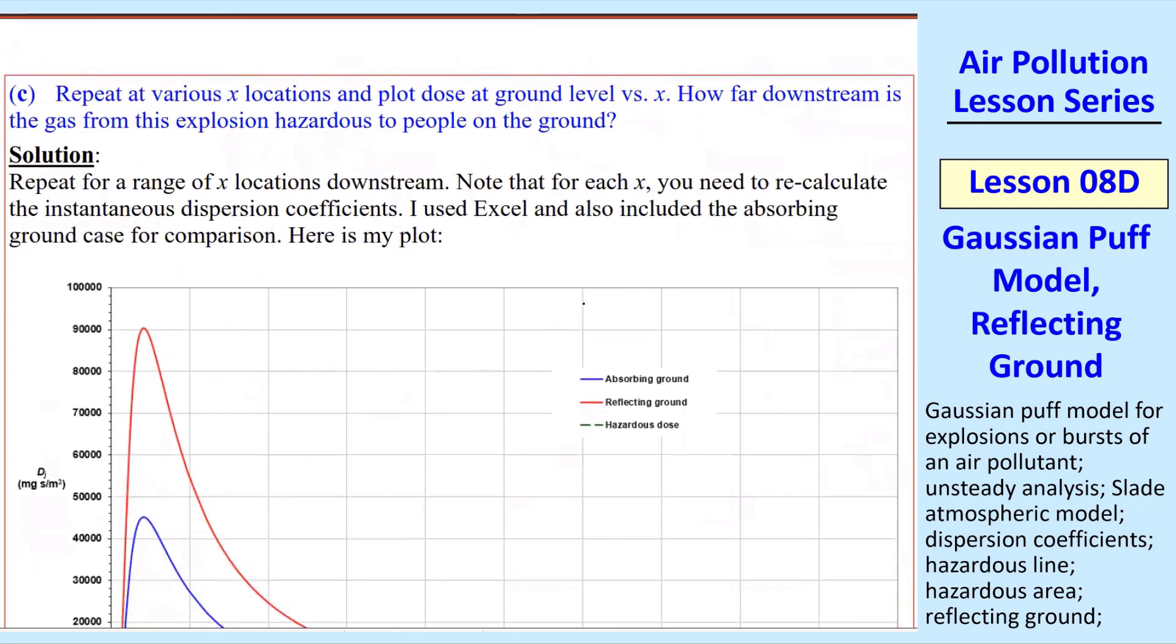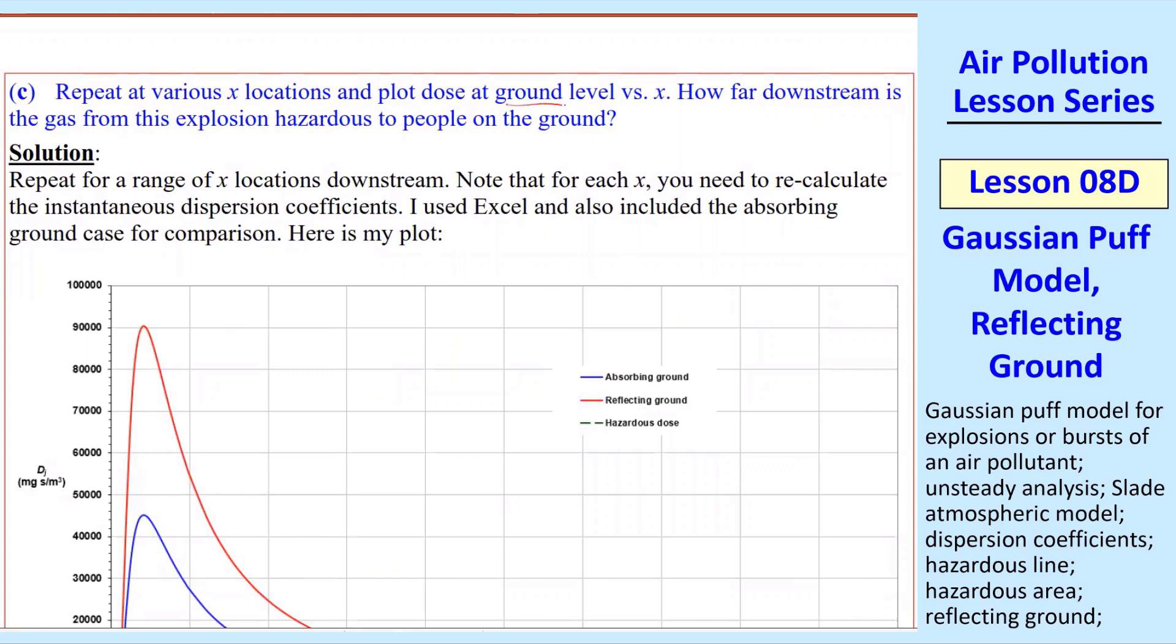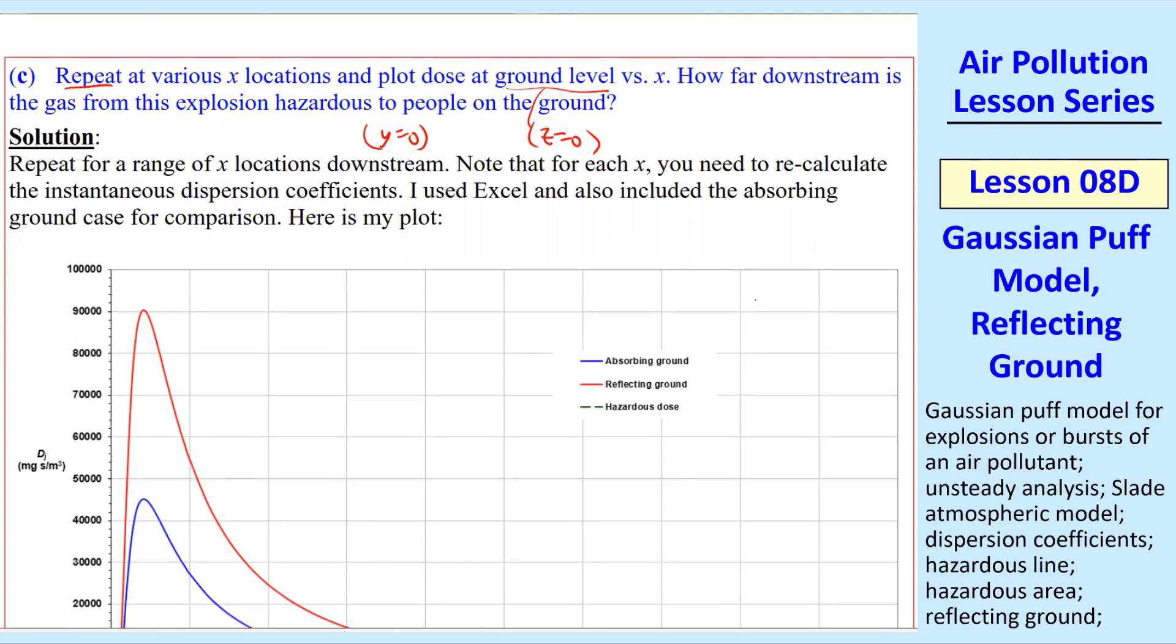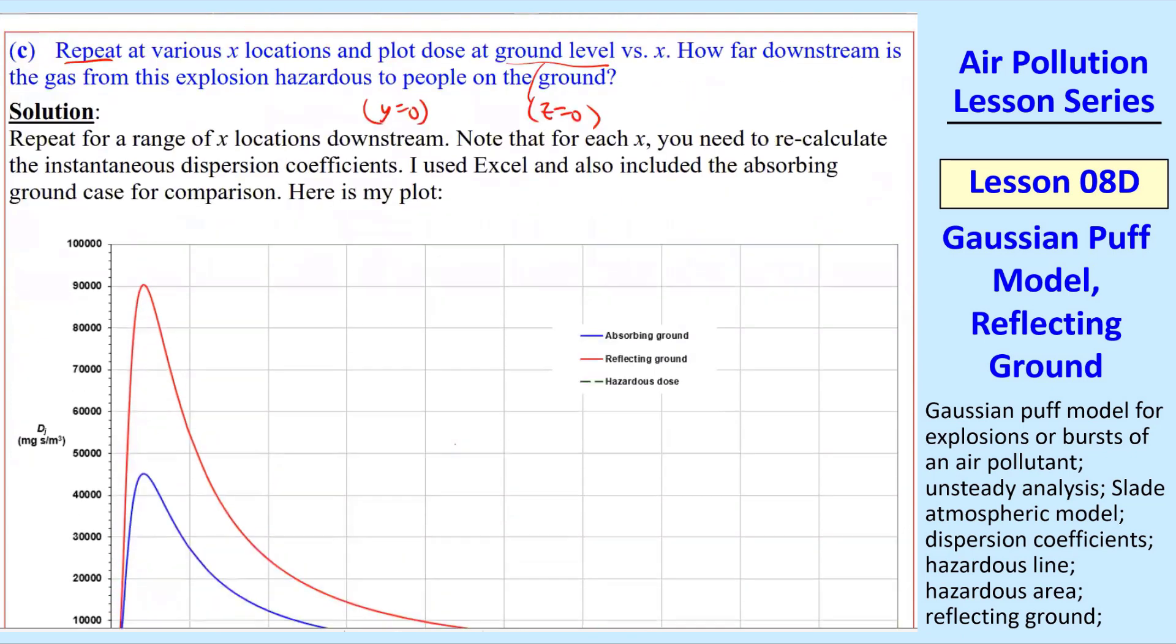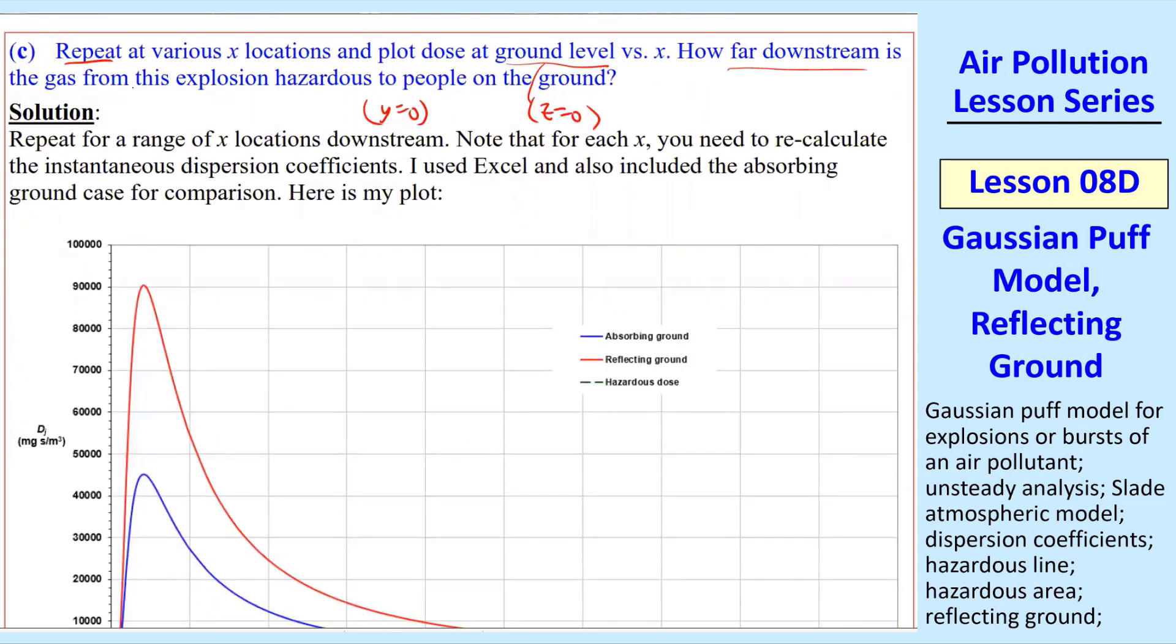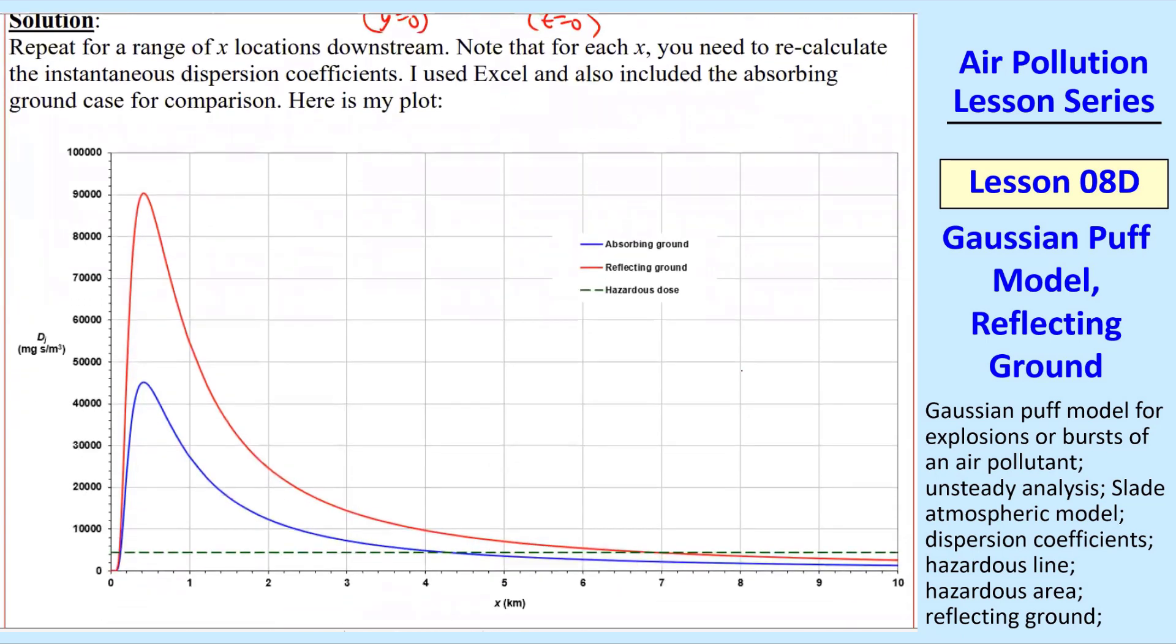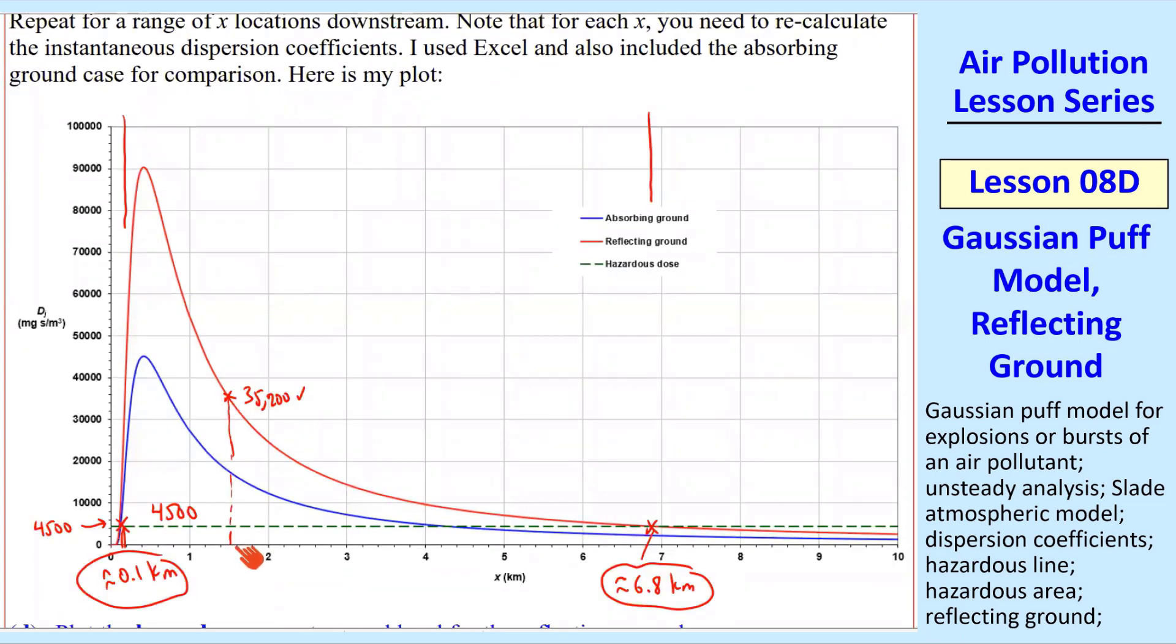Part C, we repeat this for various X locations and plot dose at ground level versus X. This is at Z equals 0, center line. Sigma Yi and sigma Zi change with X. I did everything in Excel. We check our algebra at 1.5 kilometers, our test case for Part B. We had 35,200, which agrees with this plot for the reflecting case. For the absorbing case, I plotted that for comparison. The hazardous level is 4,500, that safe level.